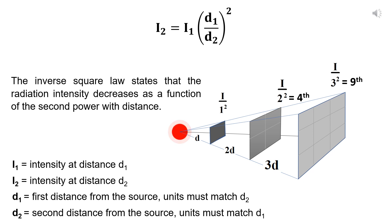This law can be found in various areas of physics. As you can see in the animation, if you double the distance from the source, the radiation intensity is reduced to one-fourth of its original value. If you triple the distance, the intensity becomes one-ninth of the original value, and so on.